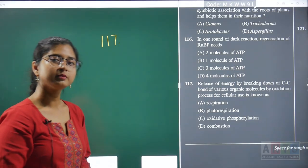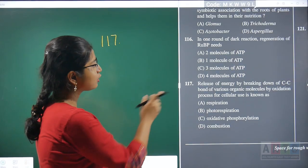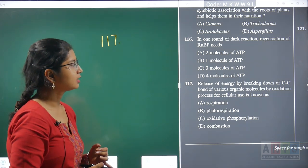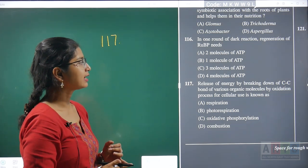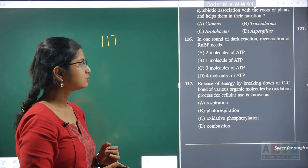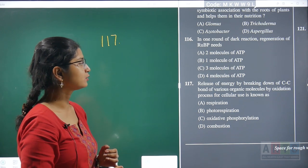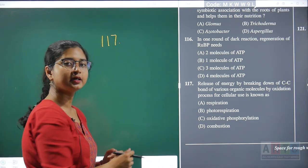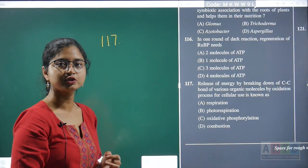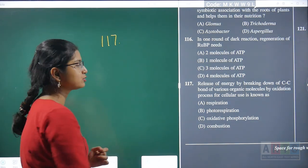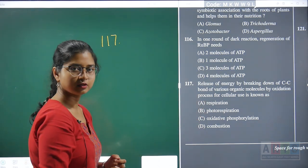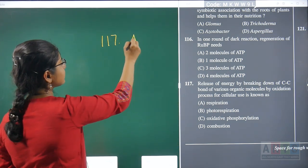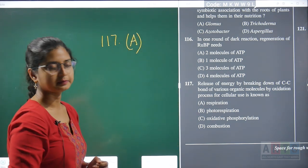Question 117: release of energy by breaking down carbon-carbon bonds of various organic molecules by oxidation for cellular use — this is a simplified definition for the process of respiration. Hence, question 117's correct answer is option A.